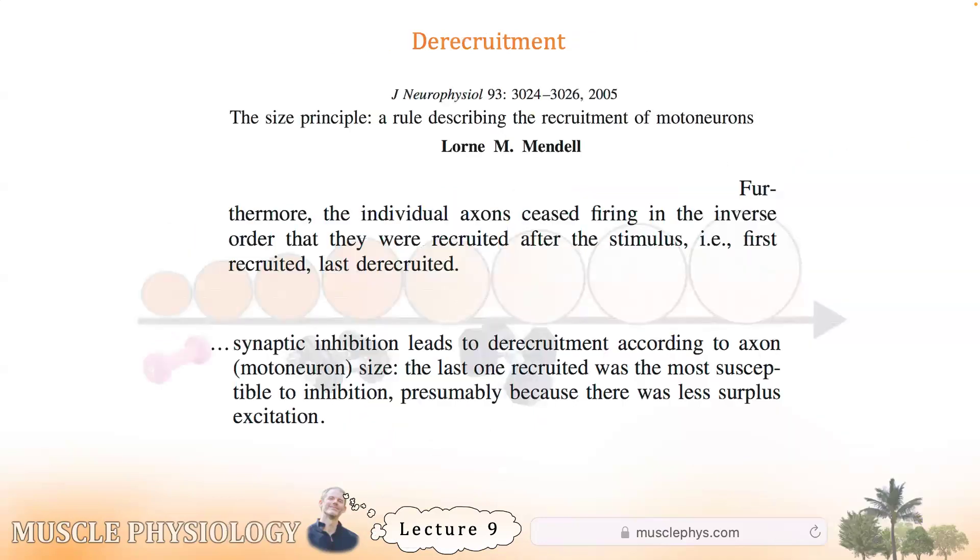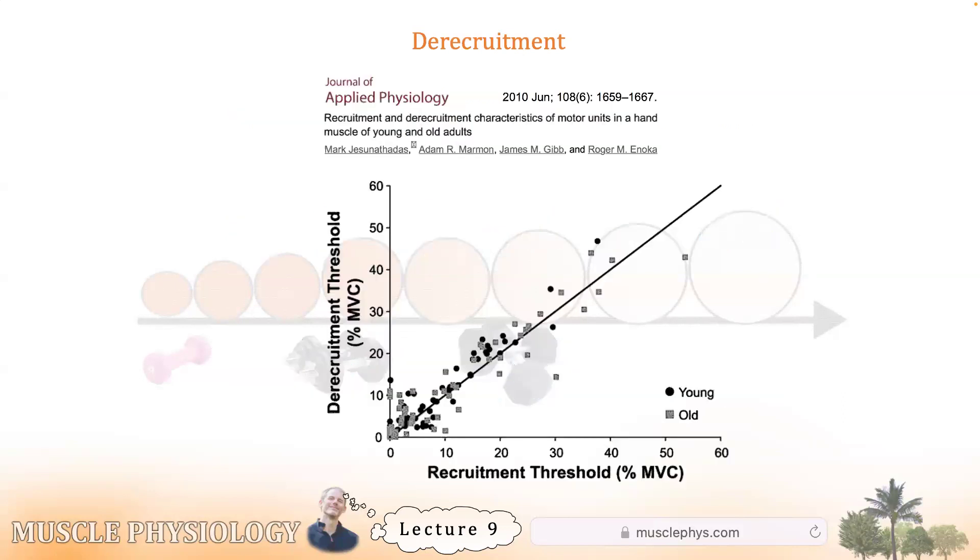Something else to note is that the de-recruitment happens in the inverse order. The last motor unit to show up to work is the first one to go home. And the first one to show up is the last one to go home. So if we're doing that intense set of bench press from a minute ago, when muscle fibers start throwing in the towel, those are the highest threshold ones. Your inner hulks are giving up first followed by your demi hulks, and then you're aspiring hulks and so on. Until you get to the puny fibers, the ones that have been firing since the contraction first began. This is just a visual representation of that illustrating that you stop contracting in the opposite order that you began. Again, the first fiber recruited is the last fiber de-recruited.